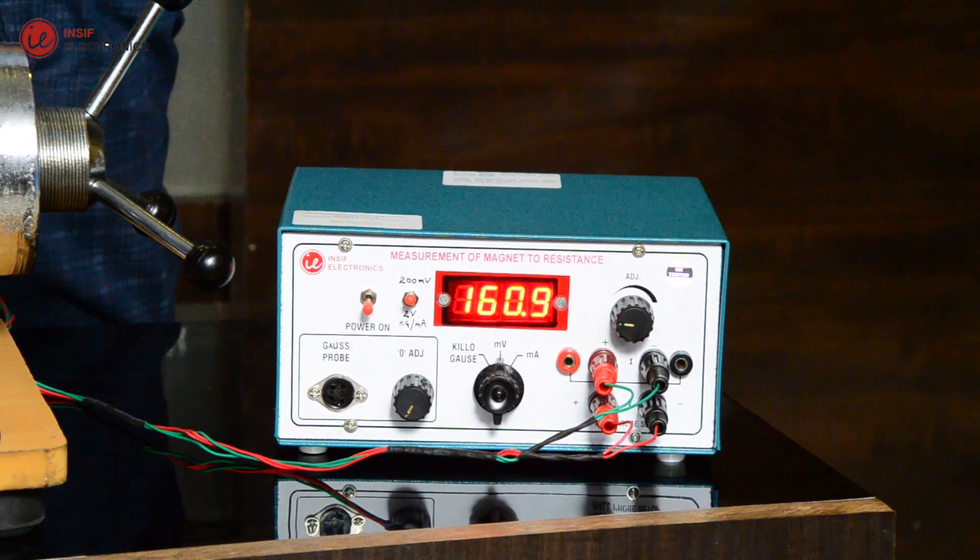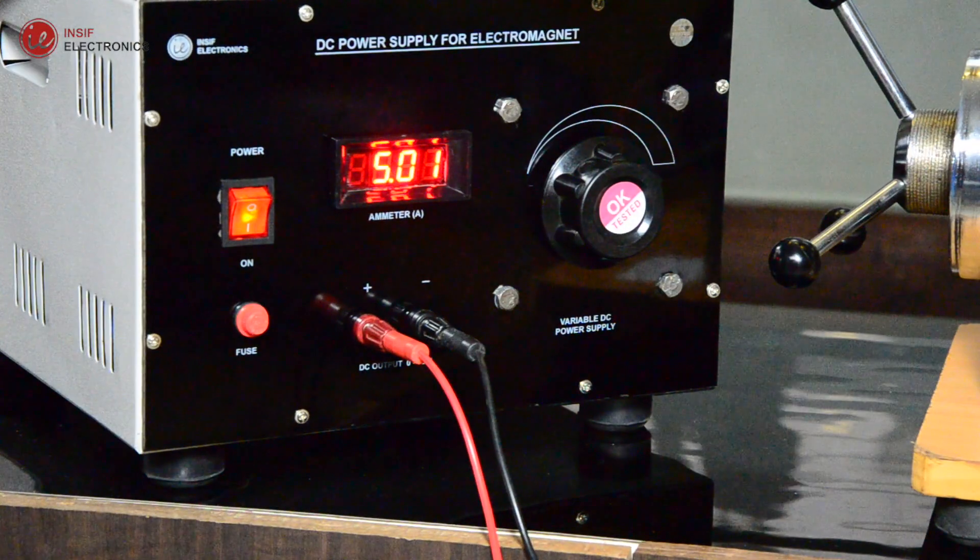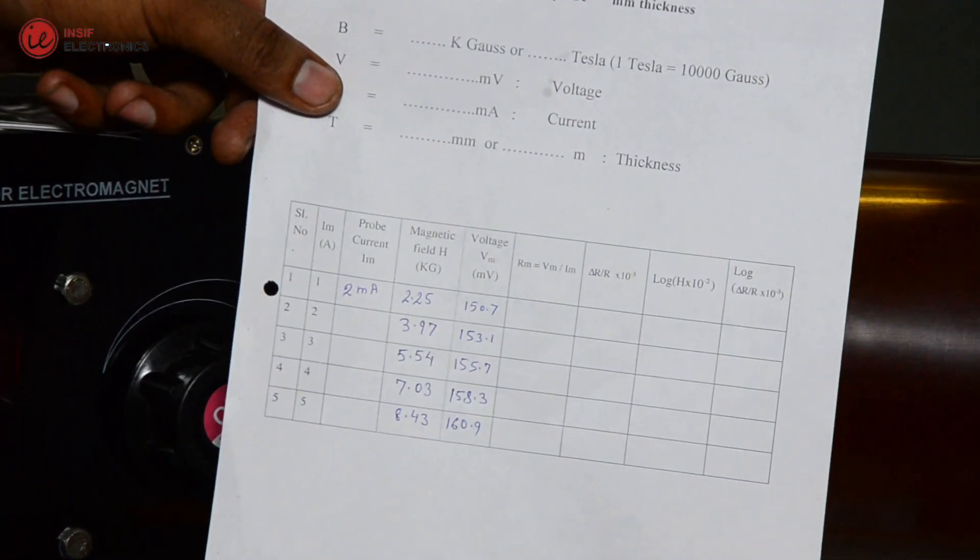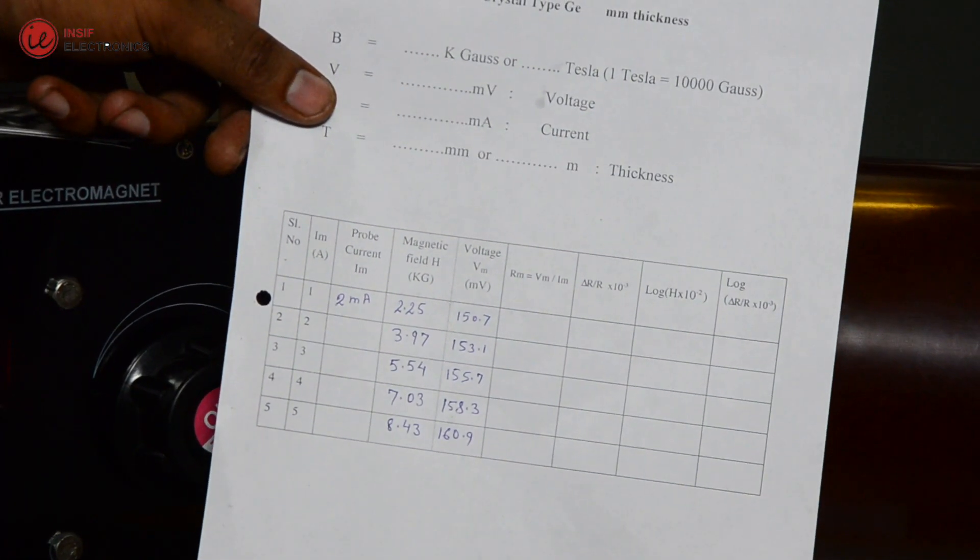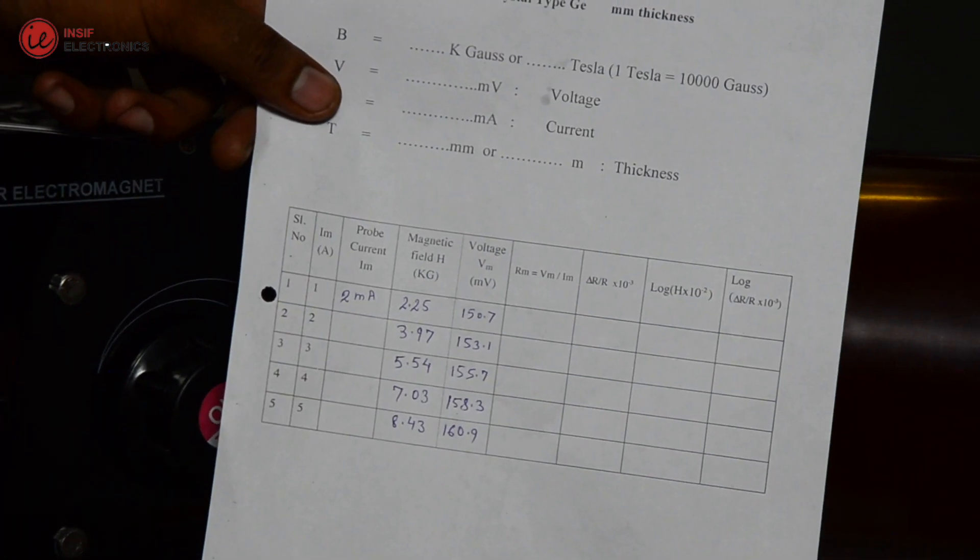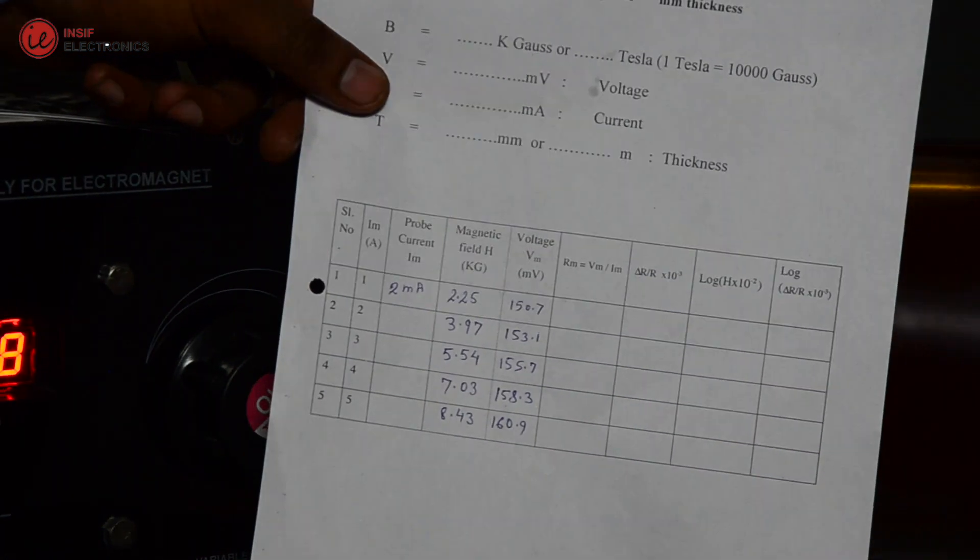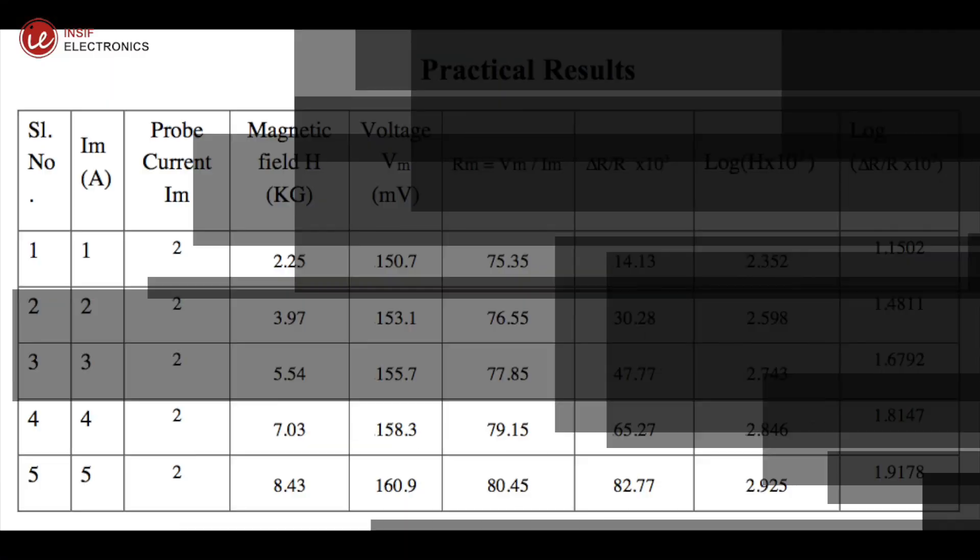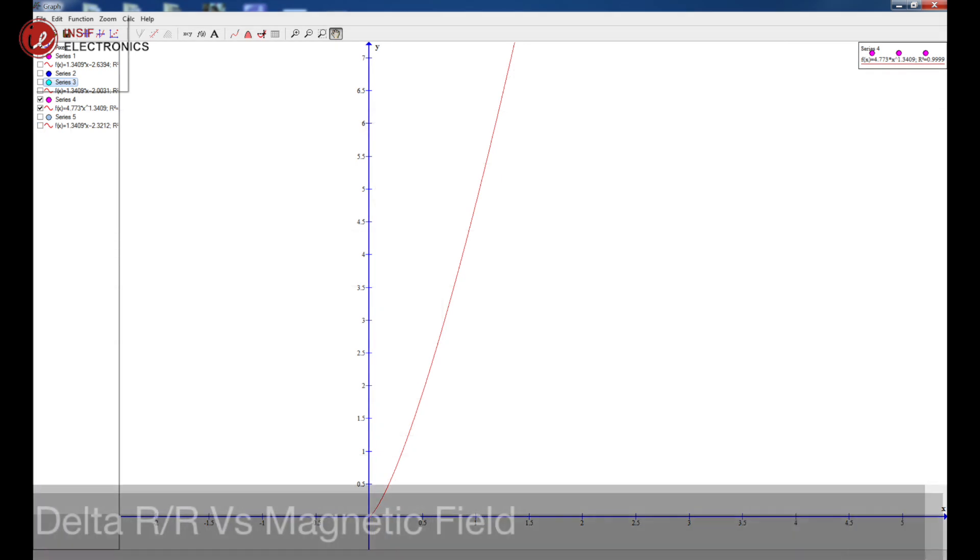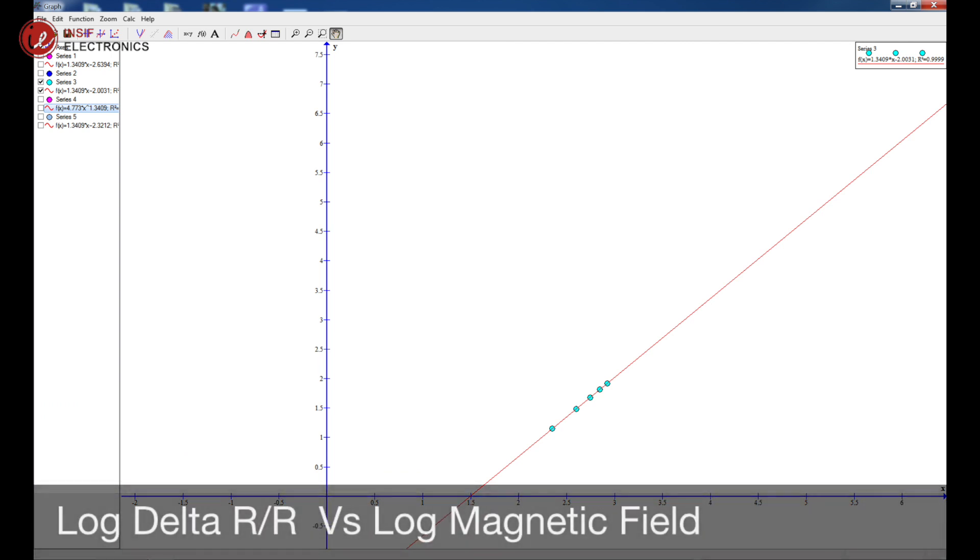Tabulate all the readings in the table and plot the graph showing delta R by R versus magnetic field, and log delta R by R versus log magnetic field.